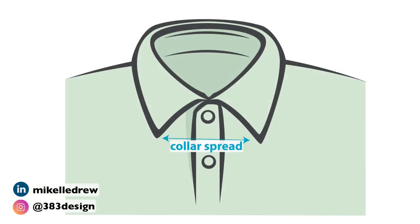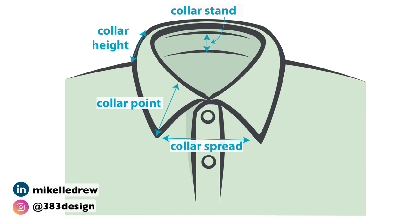Things like the collar spread, which is the distance between the collar points. The collar point, which is the distance from the collar band to the tip or point of the collar. The collar height, which is how high the collar sits on your neck. The collar stand, which is an extra band on the collar that helps it stand up against the neck and gives it a nicer roll. And the tie space, which is the distance between the top of the folded collar where the shirt is buttoned and where a tie is normally positioned.